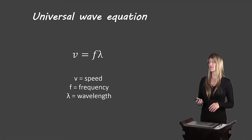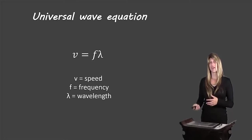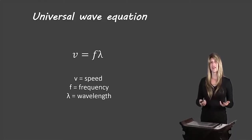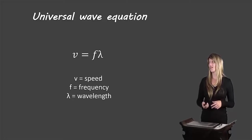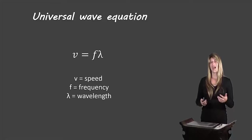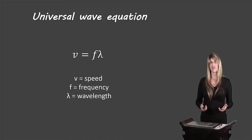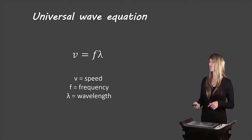Here's our formula: V equals F times lambda. That symbol that looks like an upside-down Y is called lambda. V represents the speed, F represents the frequency, and lambda represents the wavelength. Now you know which numbers to put into which space in the formula.